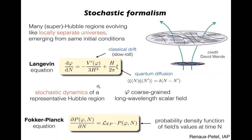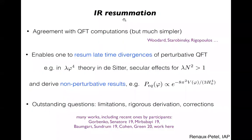In simple situations, from such a Langevin equation one can derive a Fokker-Planck equation, which describes the evolution of the probability density function that the field has a given value phi at time N, given some initial condition. What is remarkable about stochastic inflation is that it agrees with much more elaborate QFT computations. But even more interesting, it enables one to resum late-time infrared divergences of perturbative quantum field theory. For instance, in the typical λφ⁴ theory in de Sitter, despite the small coupling constant λ, if you wait long enough you will have secular divergences. But it's straightforward in the stochastic formalism to derive non-perturbative results, like the equilibrium distribution of test scalar fields in de Sitter space.